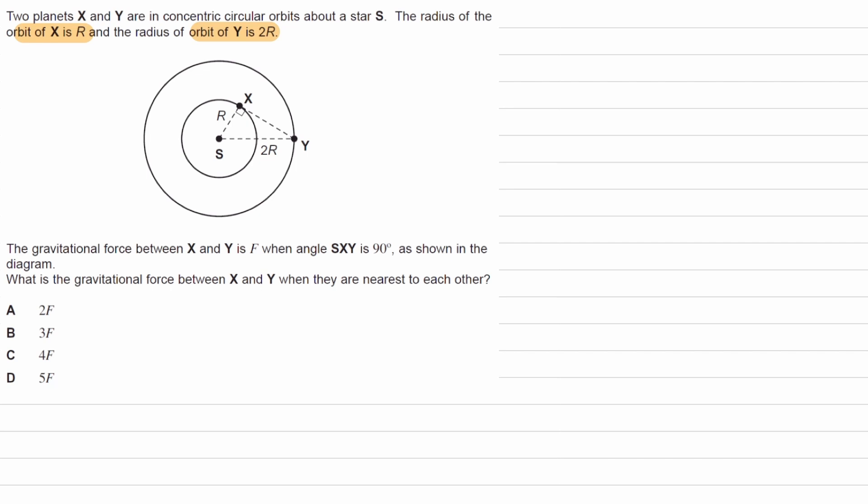This is shown on our diagram as well. We have the radius of this circle is R, and then the bigger circle is 2R.